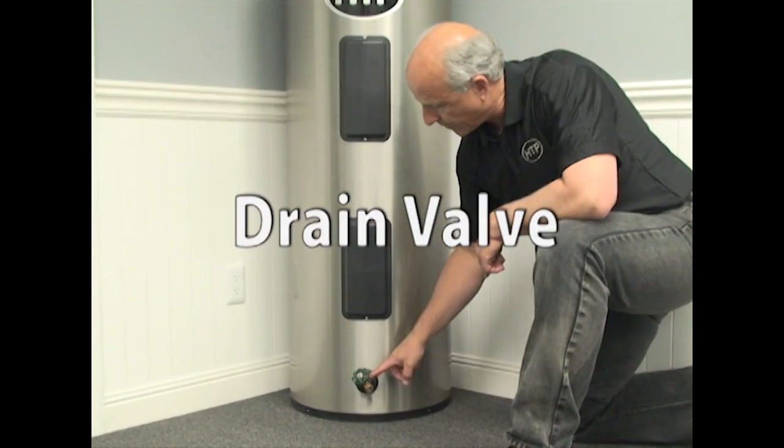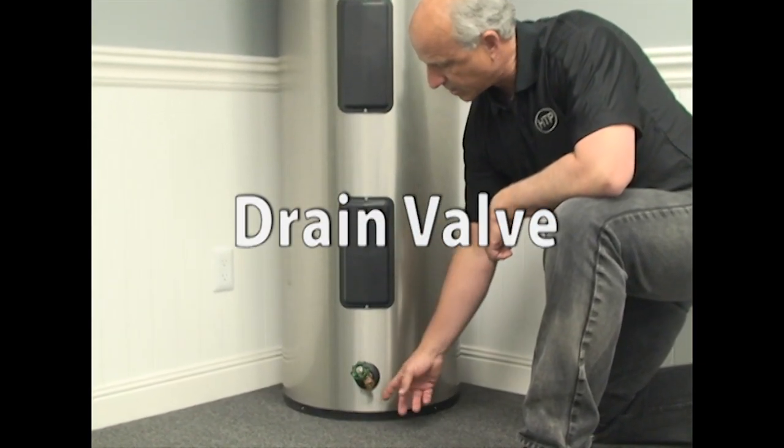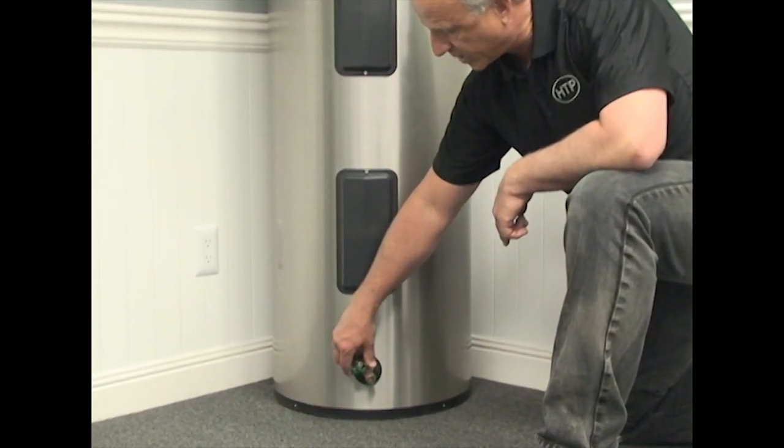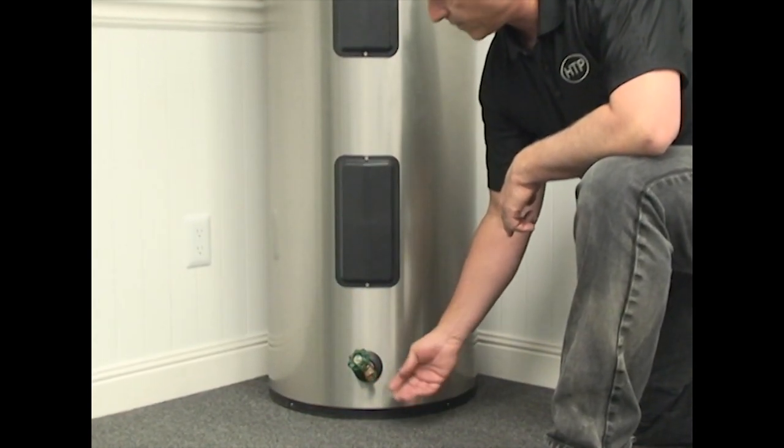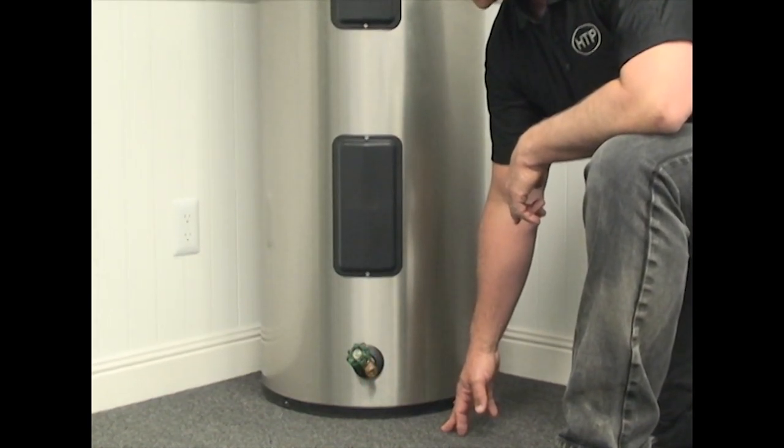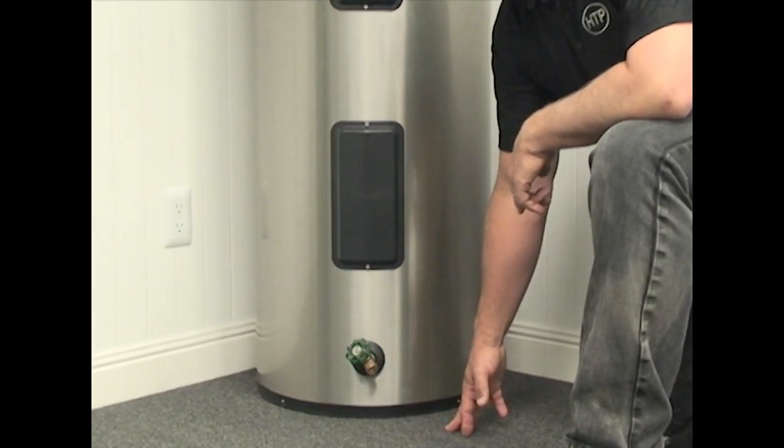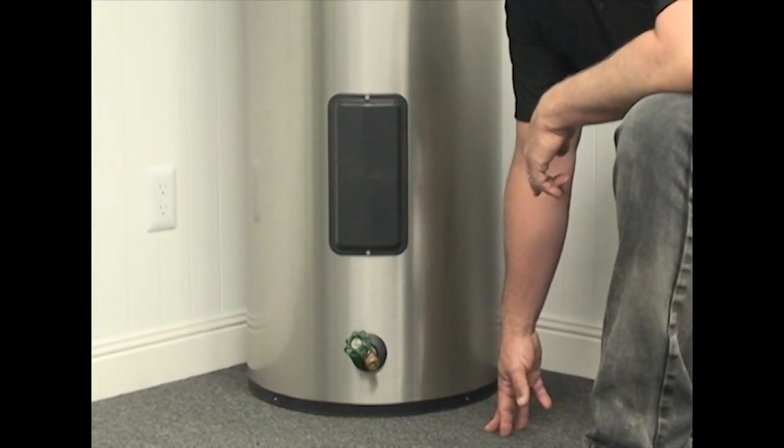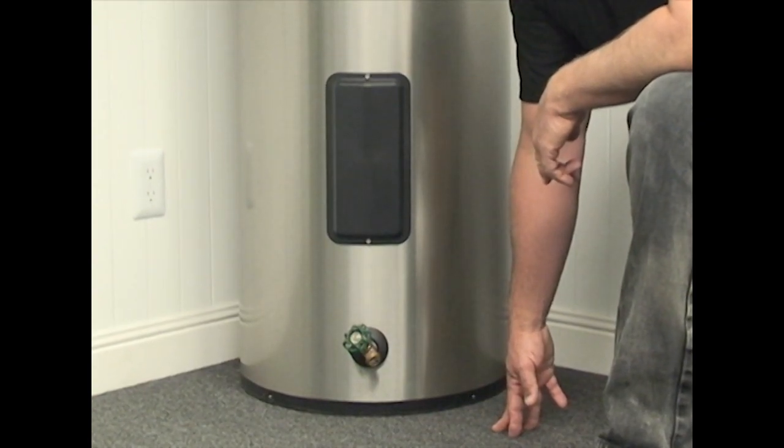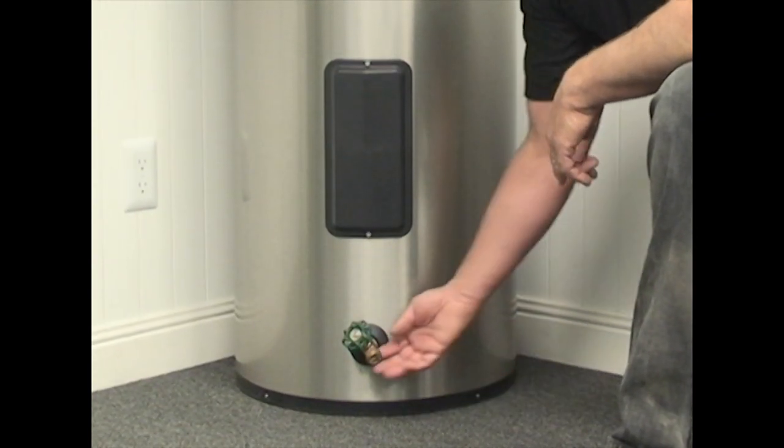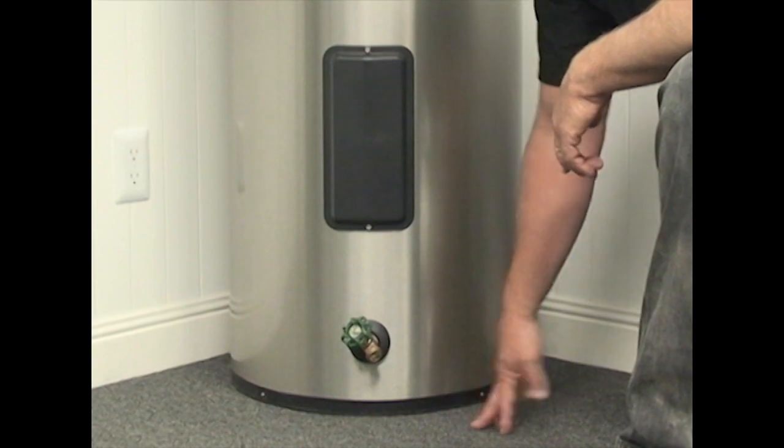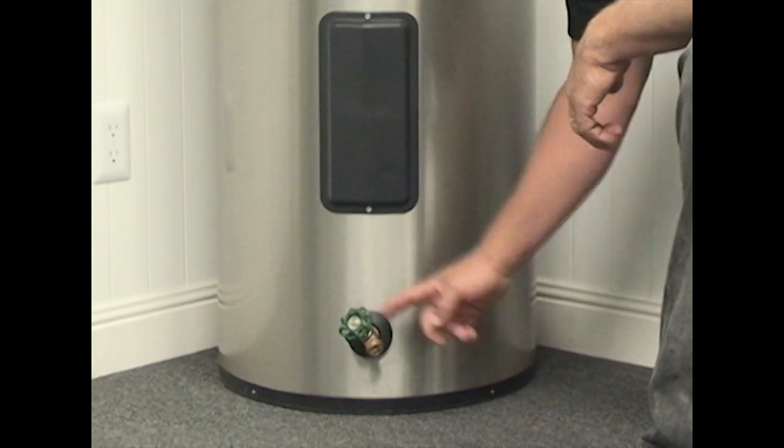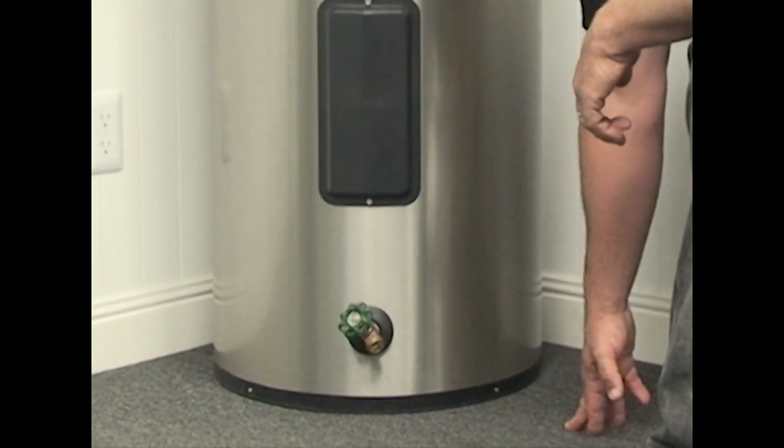This is our drain valve right here. You notice the threads, it takes a standard hose connection. It's a full port drain valve so when you open it up you get real good flow out of it. It's brass not plastic so it's built to last. Good quality drain valve that will allow the heater to, if you need to drain the tank, to get the water out very quickly. So again this comes and it's got these little notches on here so you can put a pipe wrench on if you ever have to adjust it or move it for whatever reason. So that is equipped with every single unit and it comes pre-installed.